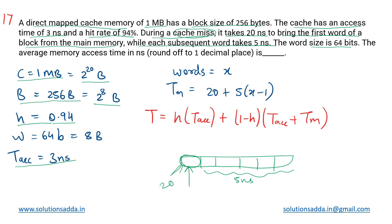The word size is given as 64 bits or 8 bytes, denoted as w. We want to find the average memory access time in nanoseconds. There are actually two approaches for this question — we might consider a hierarchical approach or a simultaneous approach. Unless specified, we default to hierarchical, but here we will analyze both independently.